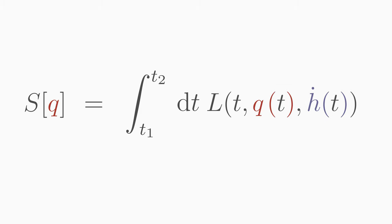Mostly you use the letter q instead of h, and q dot instead of h dot, and call q as generalized coordinate, and the derivative q dot as generalized velocity. What is meant by generalized you will learn in another video.